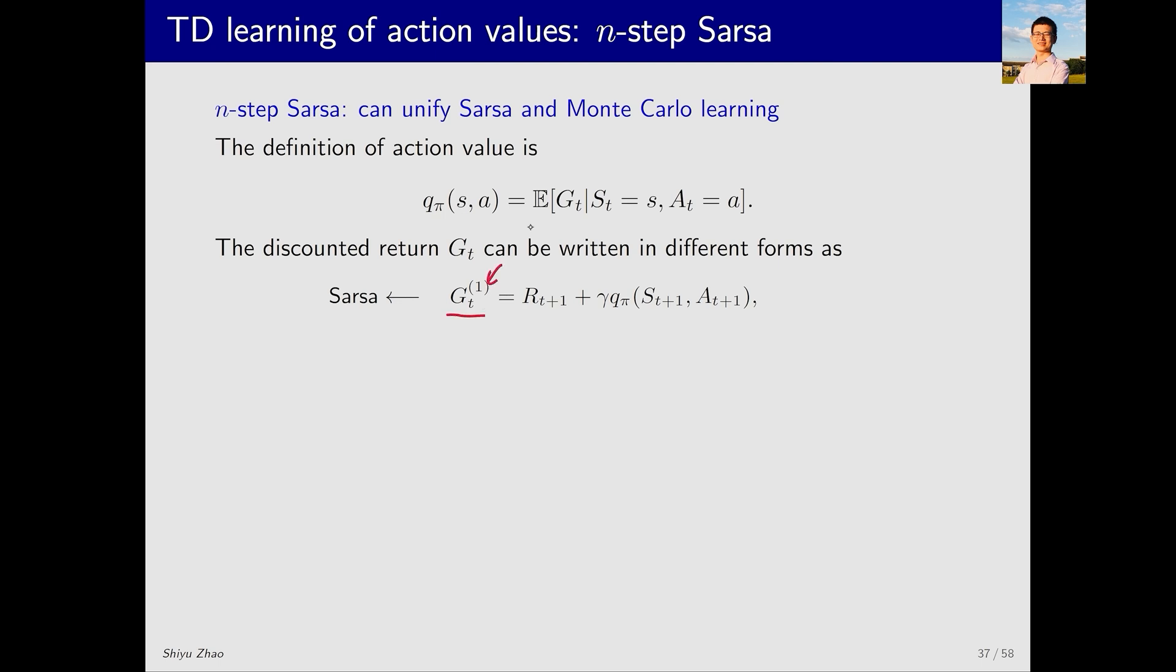Let's look at the first way to express it. In the upper right corner, the superscript represents the first decomposition method. It means that the return can be decomposed into RT plus 1 plus gamma Q pi ST plus 1 AT plus 1. This means we only consider the immediate reward at this time step, while the rewards from the next time step onward are summarized into a single Q pi term.